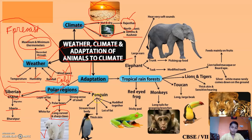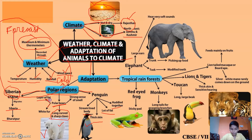The adaptation of the penguin includes a streamlined body and thick skin. It also has a lot of fat, and penguins huddle together. The layer of fat helps them stay in that very cold region. Now let's come to the second type of adaptation: tropical rainforest.